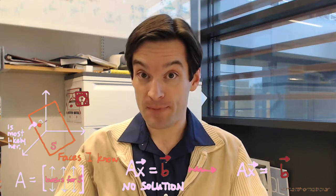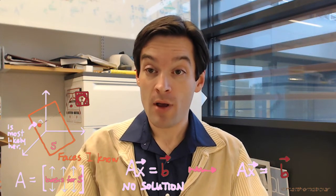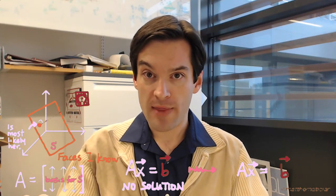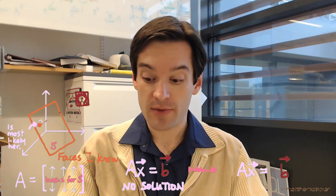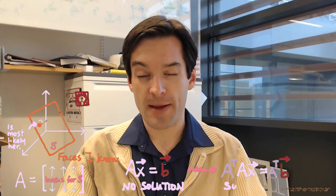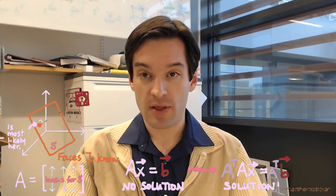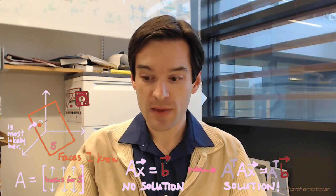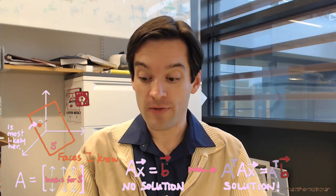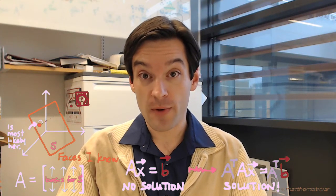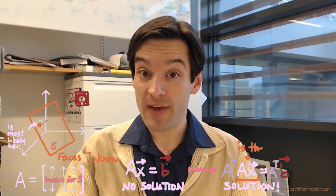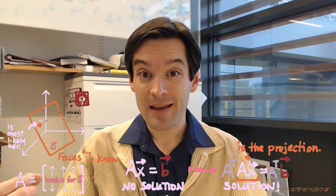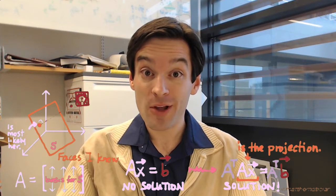But then something magical happened. To make something magic happen, all we did was take that equation Ax equals B, which has no solution, and multiply on both sides on the left by the transpose of the matrix A. Then something impressive happens. Not only does this equation end up with a solution x, but for that value of x, Ax—which is an element of S, the subspace we're trying to project onto—is actually the projection that we're looking for.